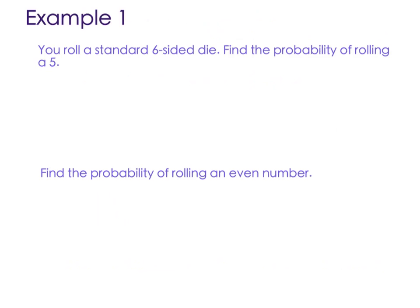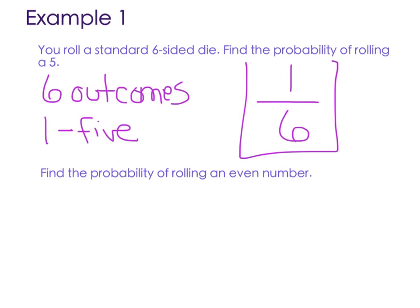For example, you roll a standard six-sided die. Find the probability of rolling a five. Well, if you roll a die one time, you have six possible outcomes. There is only one five on that dice, so there's one five. So we have one out of six. That's our probability. One out of six.